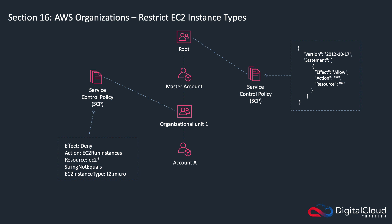This is what we're going to set up now. I've got my DCT Labs account and a second account. I'm going to create an organizational unit, apply a service control policy that doesn't allow users in that account to launch any type of EC2 instance except a T2 micro. So let's head over to the console and build this out.